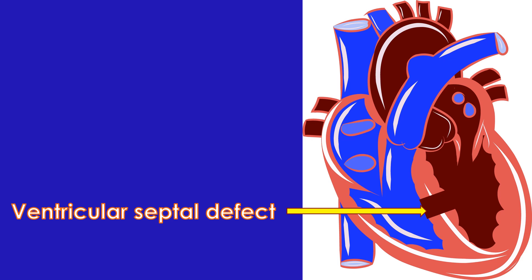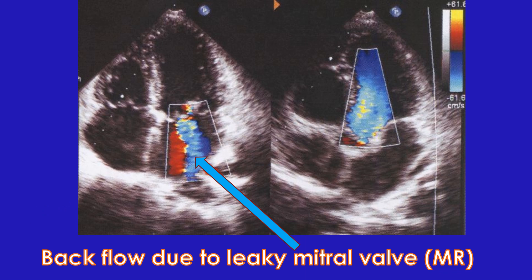Sometimes a birth defect may be present in the walls separating the heart chambers. A defect in the wall between the upper chambers is called an atrial septal defect. Ventricular septal defect is noted in the wall between the lower chambers. Any of the heart valves can also be abnormal, either as a birth defect or acquired later in life due to diseases. If a valve is narrowed, it is called stenosis — there can be mitral stenosis, aortic stenosis, tricuspid stenosis, and pulmonary stenosis, or a combination of these.